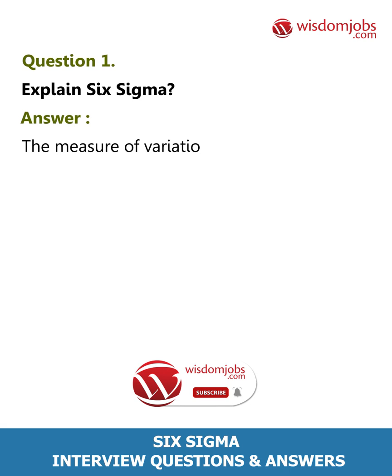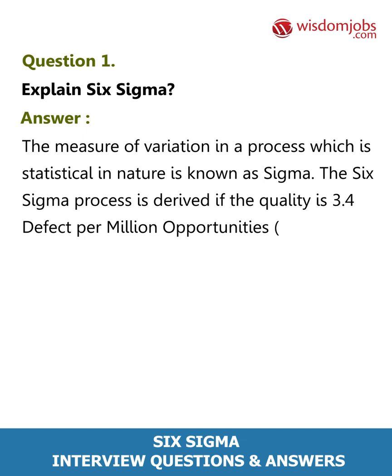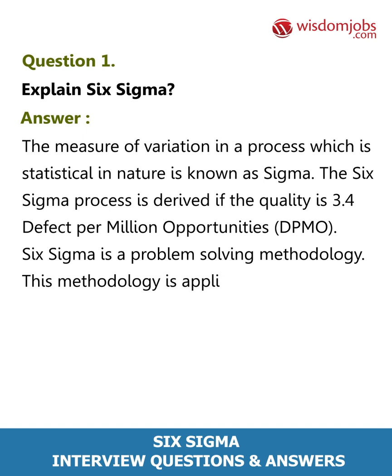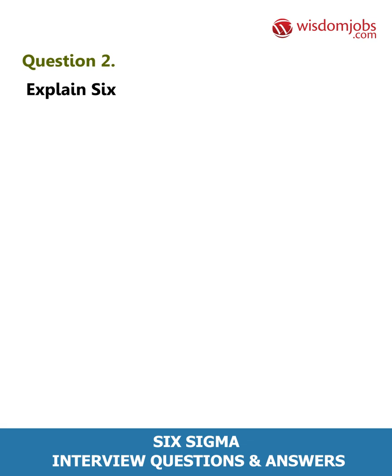Question 1: Explain Six Sigma. Answer: The measure of variation in a process, which is statistical in nature, is known as sigma. The Six Sigma process is derived if the quality is 3.4 defects per million opportunities (DPMO). Six Sigma is a problem-solving methodology applicable to a process for eliminating the root cause of defects and the costs associated with the same.